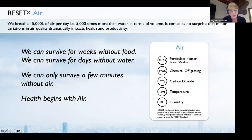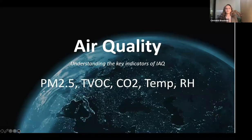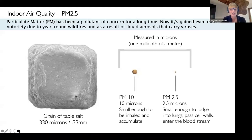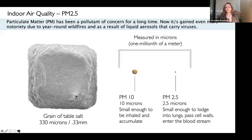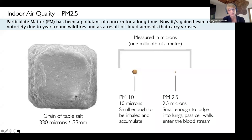We can survive for weeks without food, days without water, but only a few minutes without air — so health for us begins with air. The parameters required to be monitored by the Reset standard are PM2.5, TVOC, CO2, temperature, and humidity. Particulate matter has been a pollutant of concern for a long time, with a wide body of evidence pointing to harmful human health effects from exposure.